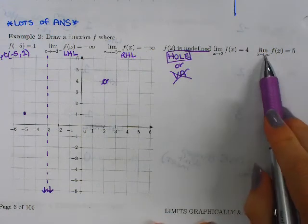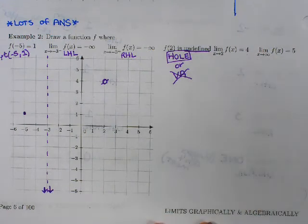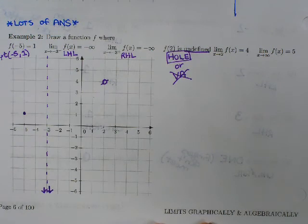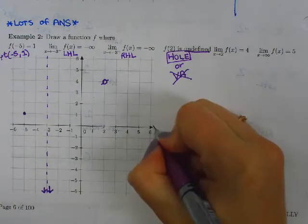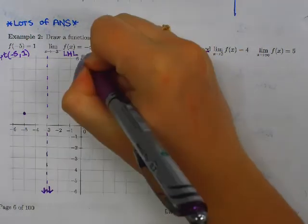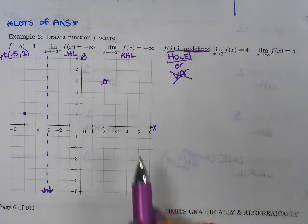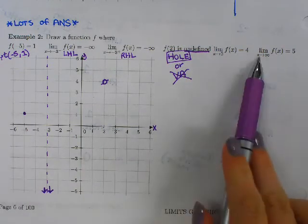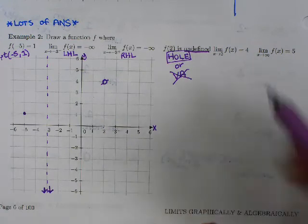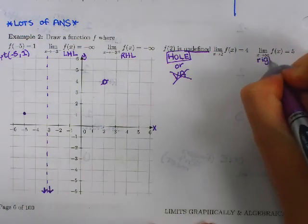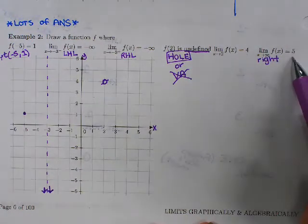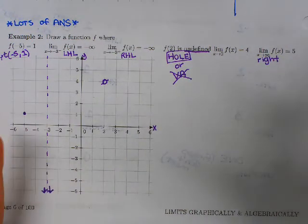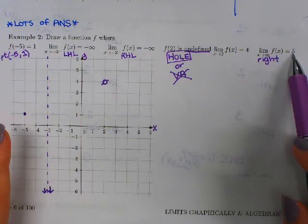So my last piece is as x goes to infinity, f of x is 5. So again, we kind of previewed this. If x is going to infinity, that is not up or down. Remember, x is either left or right. y is the up or down. So if x is going to infinity, is that x going to the left or to the right if it's going to positive infinity? That is x going to the right.